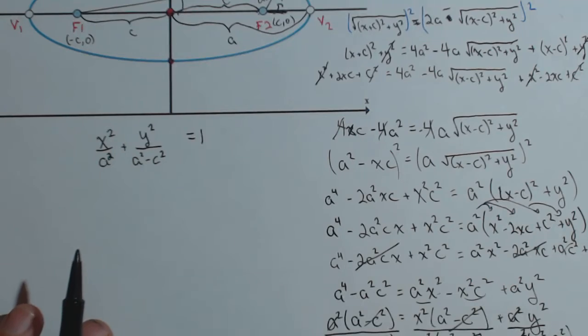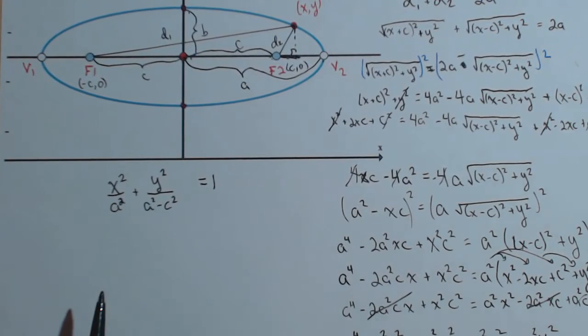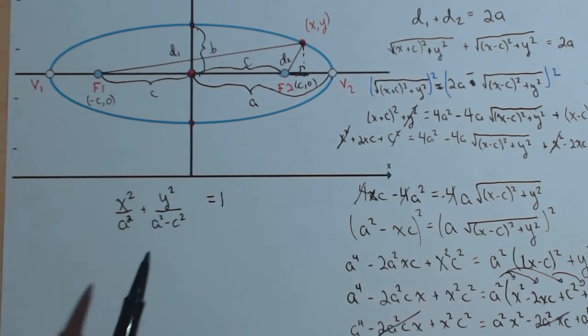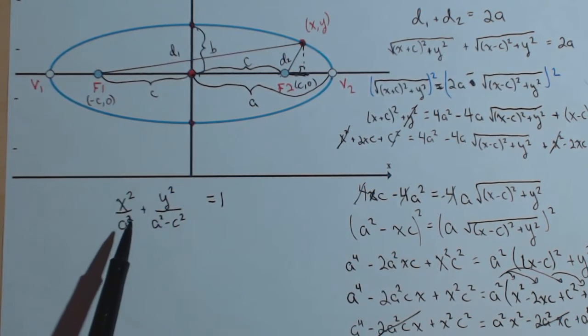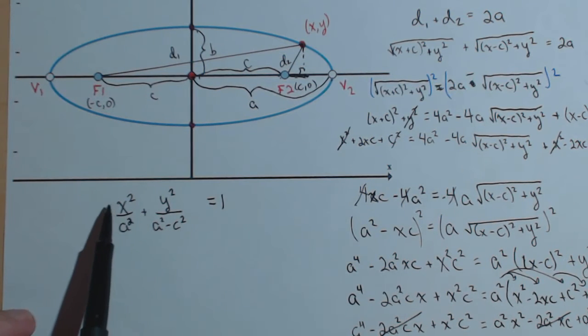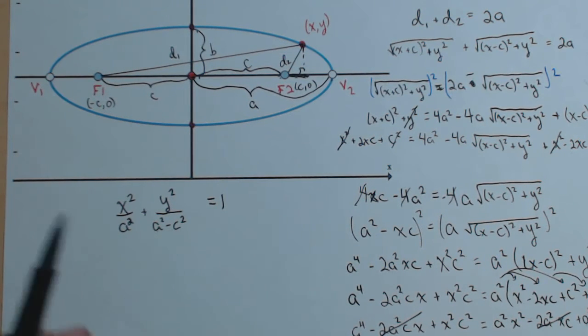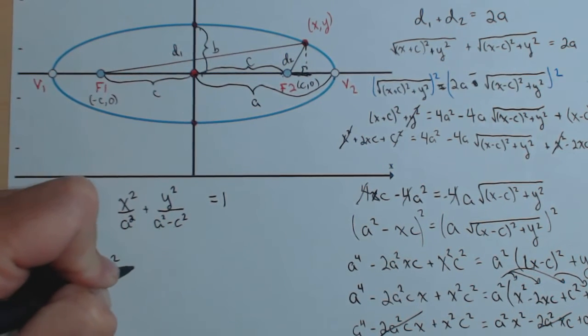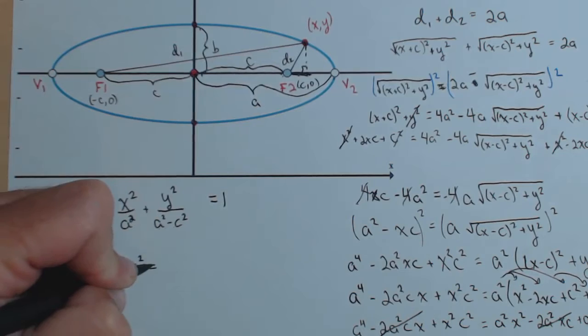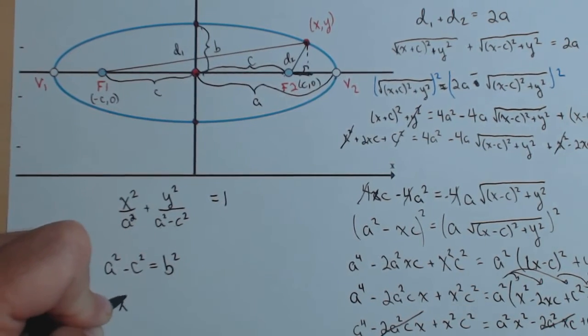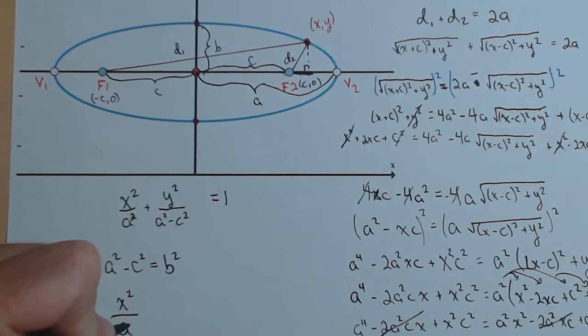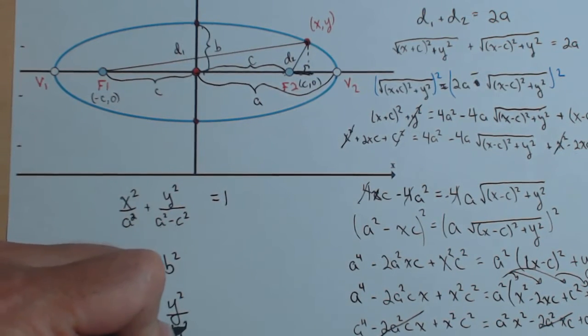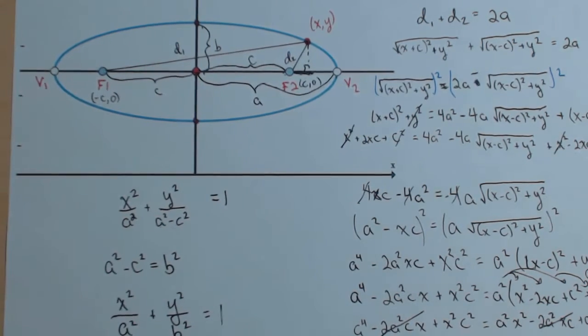Now, a couple things I want to point out. This is our general form. We're going to do a couple things before all is said and done. So, first off, things I want you to notice. First off, the a squared minus c squared is actually going to be b squared. So, a squared minus c squared equals b squared, which gives us the more common form that we see, x squared over a squared plus y squared over b squared equals 1.